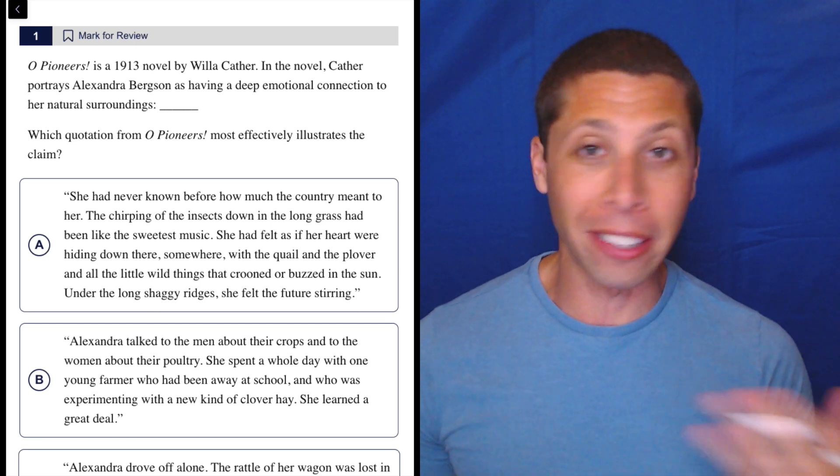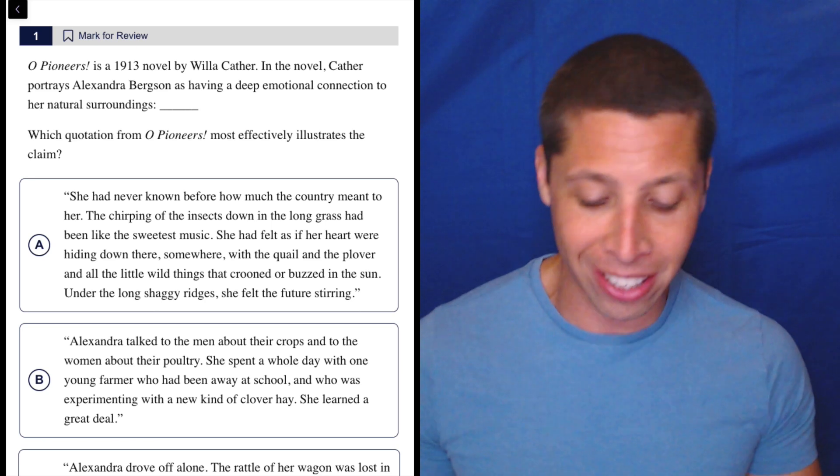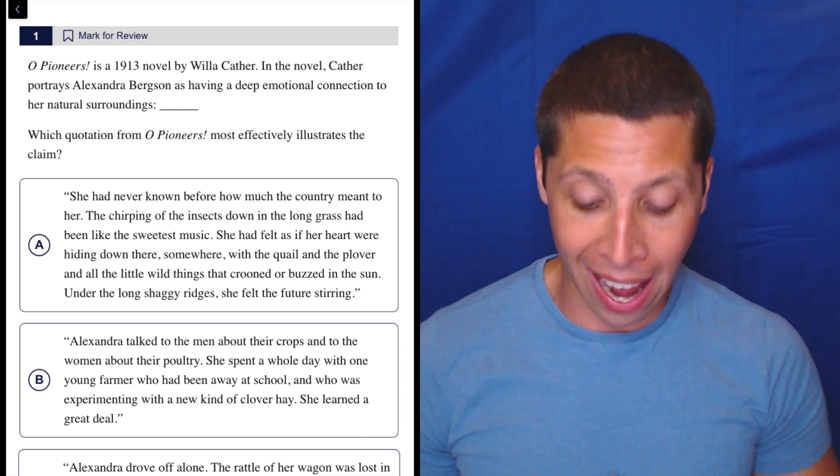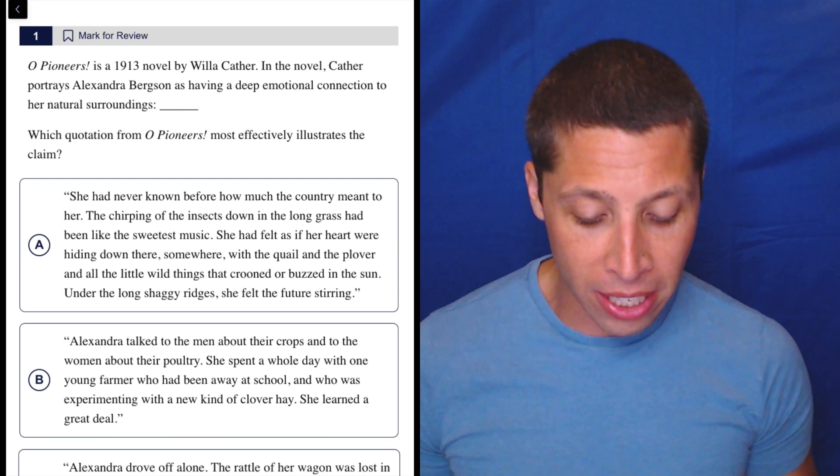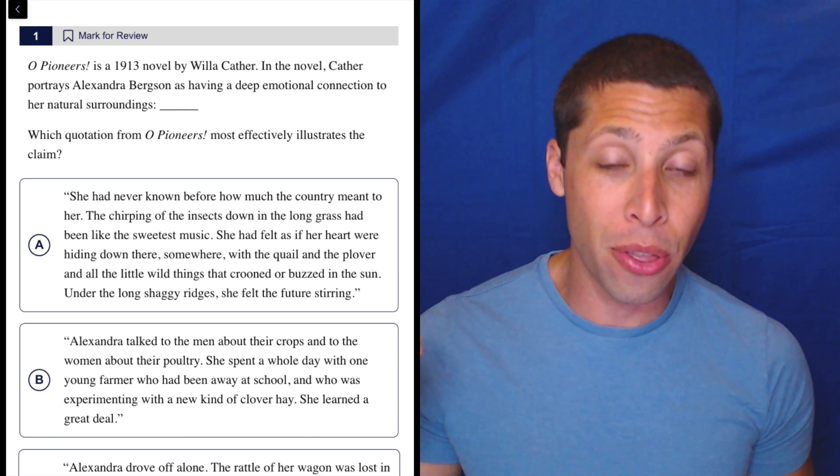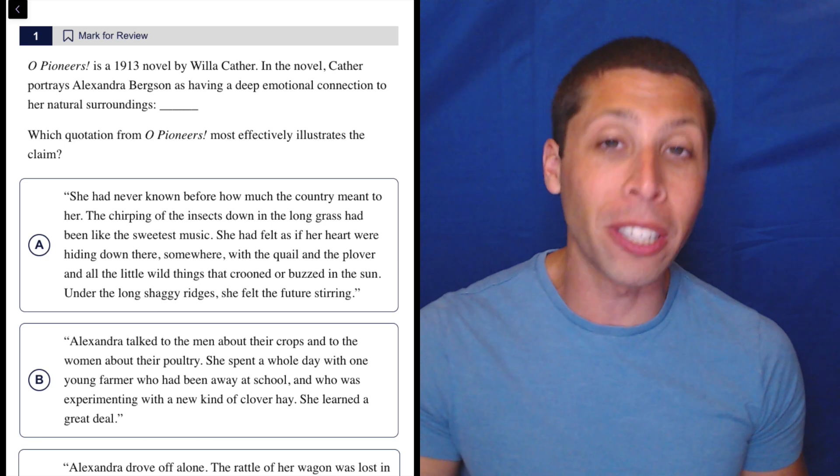So let's go to the passage. We get a little background information about the book, not really important. So O Pioneers is a 1913 novel by Willa Cather. I don't care. However, in the novel, Cather portrays Alexandra Bergeson as having a deep emotional connection to her natural surroundings. So that's the claim. We need to continue that. That's what the colon is signifying.